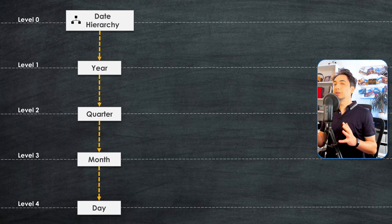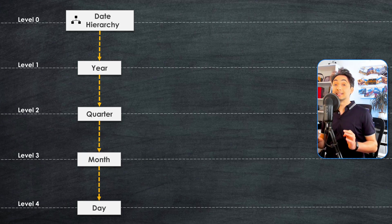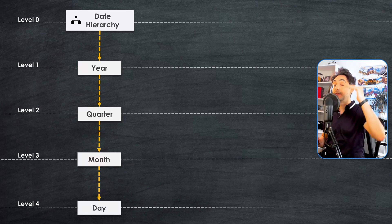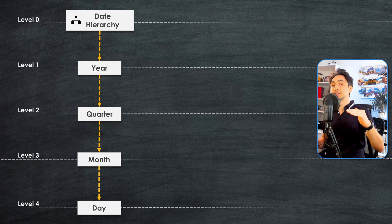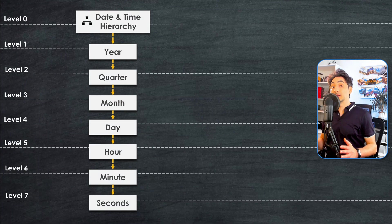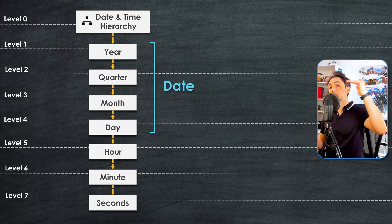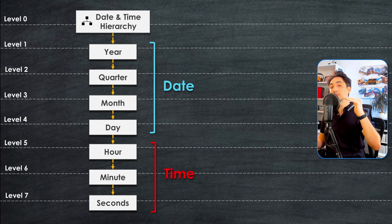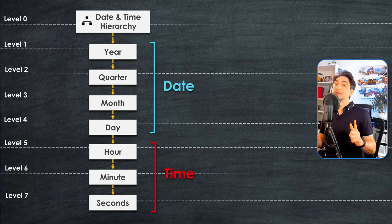In Tableau, there are also indirect embedded hierarchies in the date data type. Any field with the data type 'Date' has a built-in hierarchy: Year at the highest level, then Quarter, Month, and Day at the lowest level (the leaves). Fields with the 'Date and Time' data type have seven levels: Year, Quarter, Month, Day, Hour, Minutes, and Seconds — with Seconds being the lowest level. These hierarchies are embedded inside the data type.